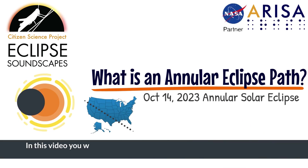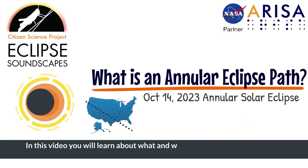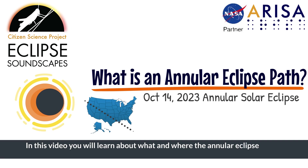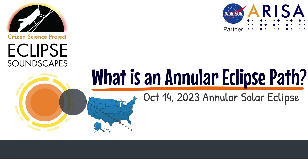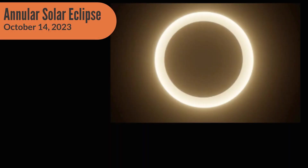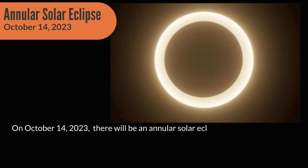In this video, you will learn about what and where the Annular Eclipse path is for the October 14, 2023 Annular Solar Eclipse. On October 14, 2023, there will be an Annular Solar Eclipse in the United States.